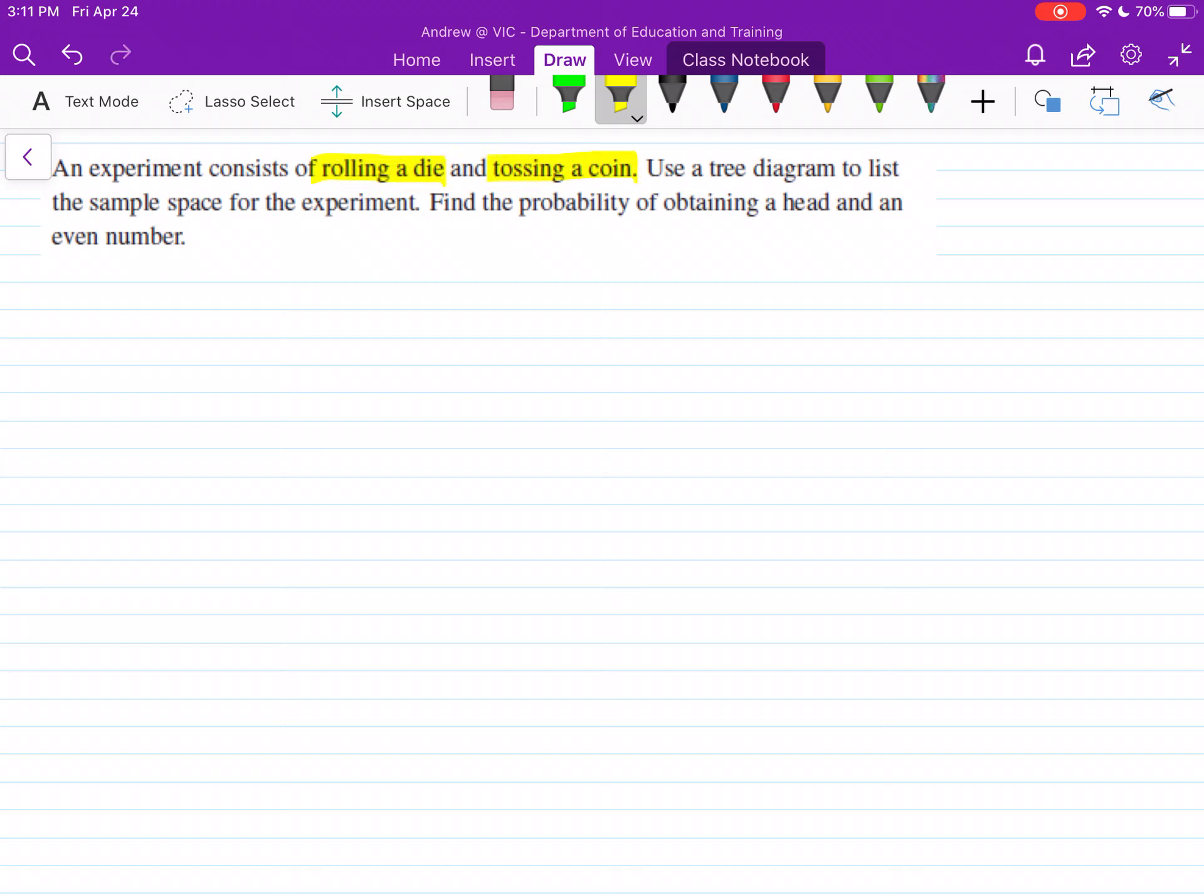We're presuming that it's a six sided die because that's our normal sided die. So use a tree diagram to list the sample space for the experiment. So this is one part of the question so make sure you are doing this. And find the probability of obtaining a head and an even number. So that's what we need to write out at the end.